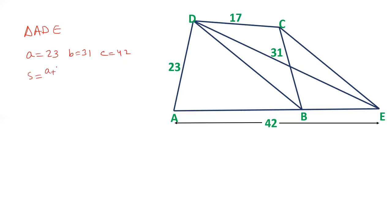Calculate s, which is a plus b plus c by 2, which is 23 plus 31 plus 42 by 2. Let's find out the sum of this: 96 by 2, that is 48. So semi-perimeter is 48.